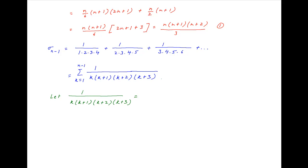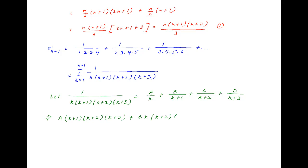We assume that 1/[k(k+1)(k+2)(k+3)] equals a/k + b/(k+1) + c/(k+2) + d/(k+3), where a, b, c, d are constants to be determined. Multiplying both sides by k(k+1)(k+2)(k+3), we get: a(k+1)(k+2)(k+3) + b·k(k+2)(k+3) + c·k(k+1)(k+3) + d·k(k+1)(k+2) = 1.